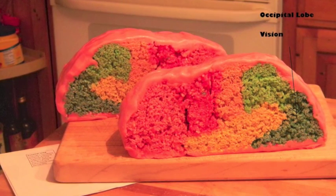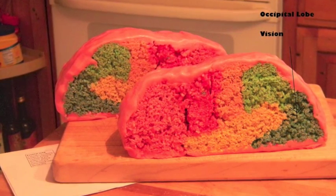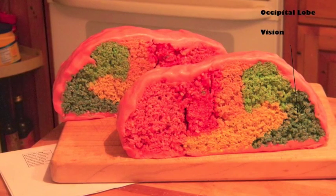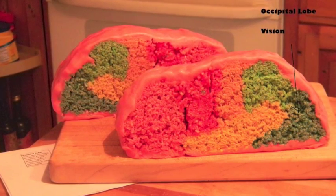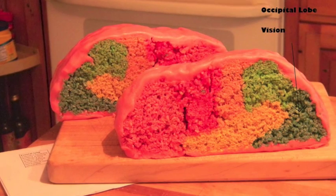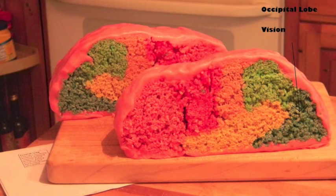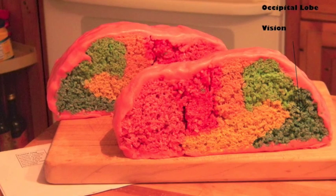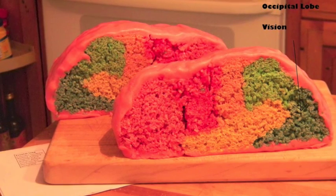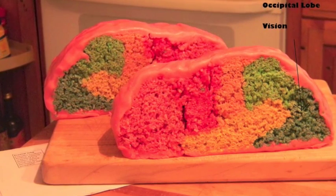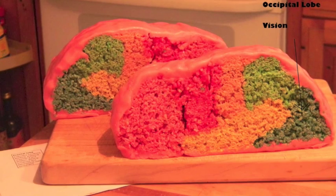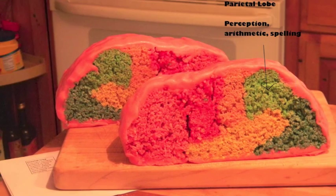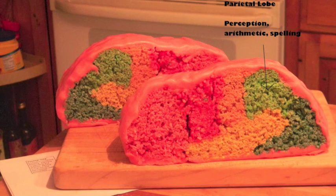Our occipital lobes are at the very back of our brain, farthest from our eyes. This is somewhat anti-intuitive since one of the major functions of this lobe is to interpret messages from our eyes in our visual cortex. Impulses from the retinas in our eyes are sent to the visual cortex to be interpreted. Impulses from the right half of each retina are processed in the visual cortex in the right occipital lobe, while impulses from the left part of each retina are sent to the visual cortex in our left occipital lobe.